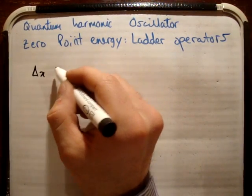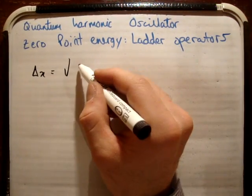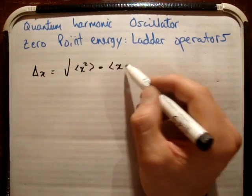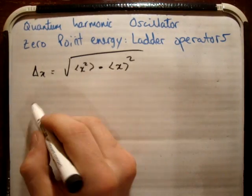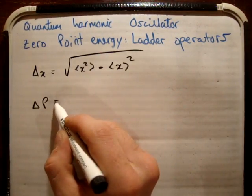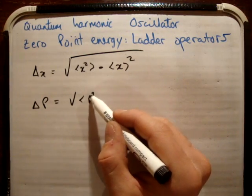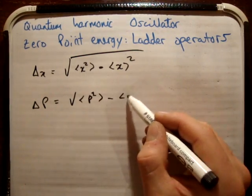So I'm going to define my uncertainty in x as equal to the square root of the average of x squared minus the average of x to be squared. I'm going to define my uncertainty in p as the average of p squared minus the average of p to be squared.